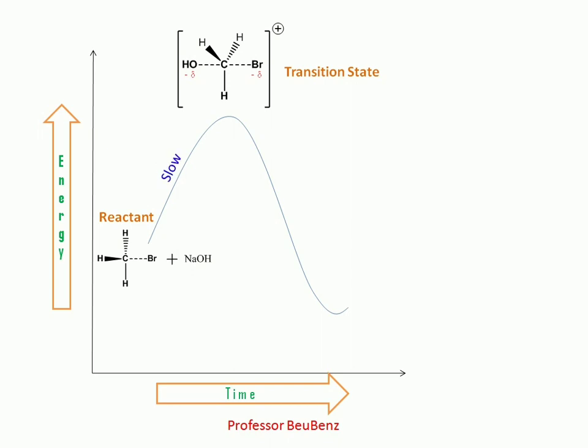This reaction is slow up to the transition state, but after this it goes faster and forms the product, methyl alcohol and sodium bromide as a byproduct. Methyl alcohol forms with 100% inversion as we have seen in previous video. This is the difference between the energy, called the energy of activation.